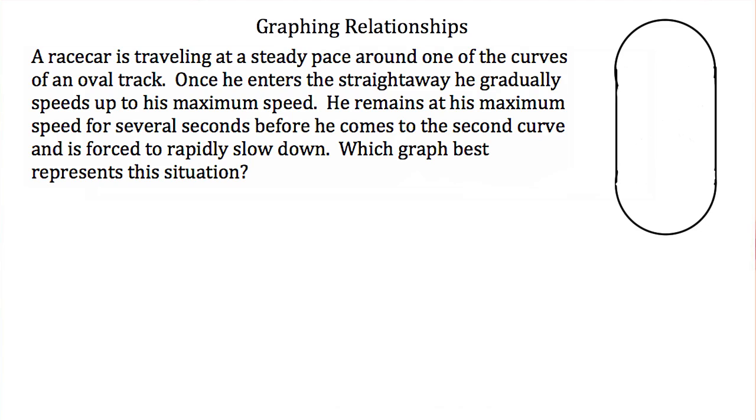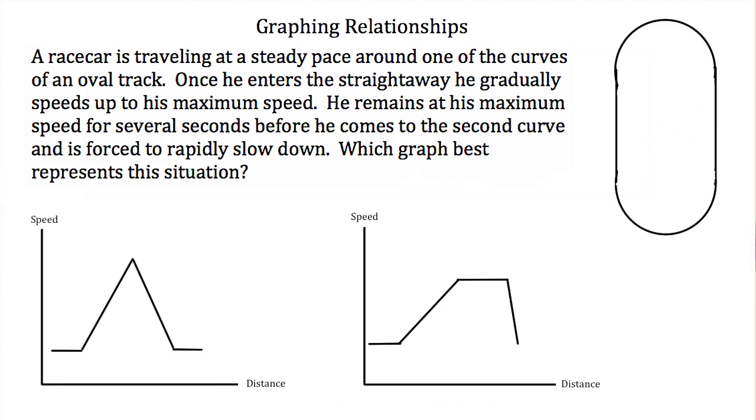He remains at his maximum speed for several seconds before he comes to the second curve and is forced to rapidly slow down. So which of these graphs best represents this situation?